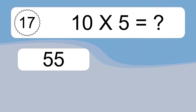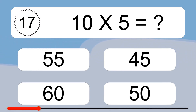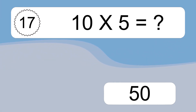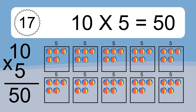10 times 5 equals what? 10 times 5 equals 50. We have 10 boxes, and each box has 5 colorful balls inside. If you count all the balls in all the boxes together, you will have 10 times 5 balls. This equals 50 balls.